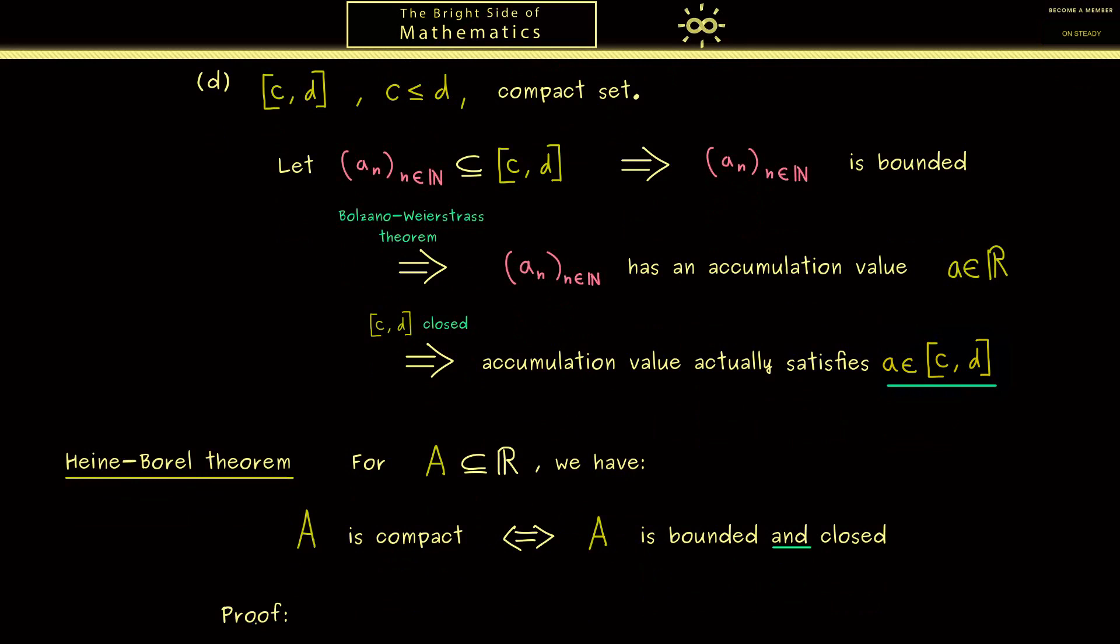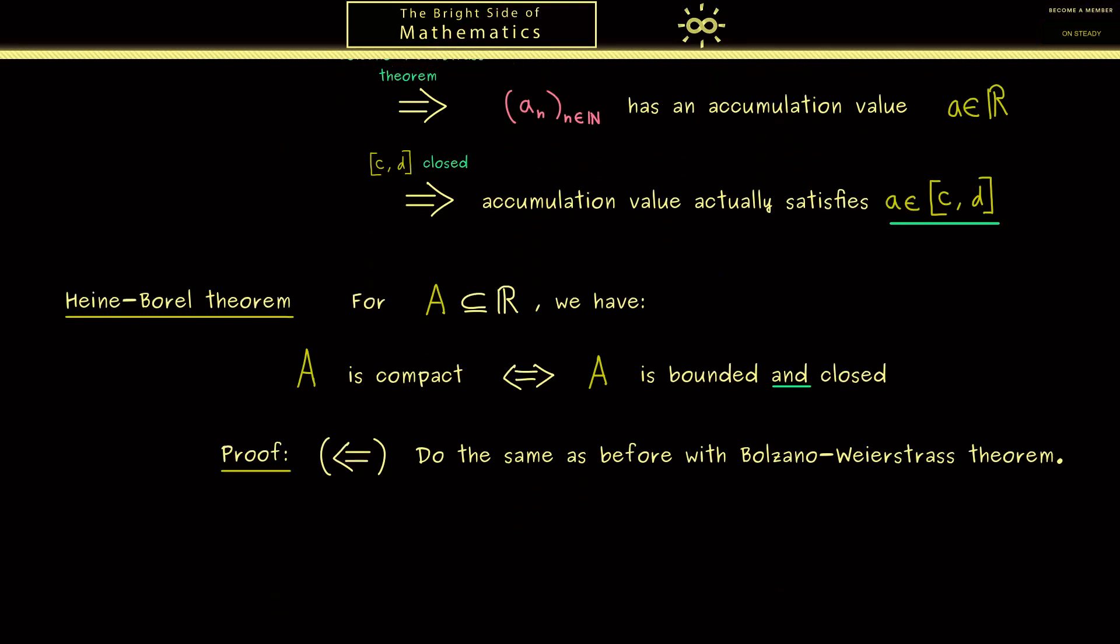For the rest of the video I would say let's do the proof of it. Indeed the direction from the right hand side to the left hand side we have already proven. Of course you remember the only things we needed for the argument above is that A is a bounded set such that we can use Bolzano-Weierstrass and the other thing was that the set is closed. Which guarantees us that the accumulation value is actually in A. Therefore only the direction from left to right remains.